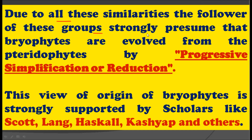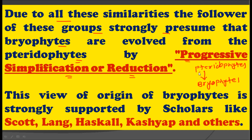The followers of this group strongly presume that bryophytes evolved from pteridophytes by progressive simplification, or reduction. As pteridophytes are more evolved than bryophytes, if bryophytes originated from pteridophytes, there must have been some reduction — that is, the structure got simpler rather than more complex. Evolution generally goes from simple to complex, but in this hypothesis, the bryophytes evolved from pteridophytes by progressive simplification.